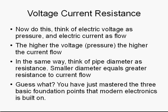Think of electric voltage as pressure and electric current as flow. The higher the voltage or pressure, the higher the current flow. In the same way, think of pipe diameter as resistance — the smaller diameter equals the greater resistance. You have just mastered the three basic foundation points that modern electronics is built on.